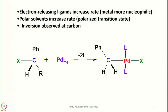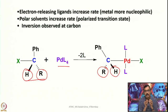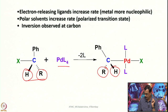Taking a chiral compound as an example, since addition occurs in a trans fashion, the configuration is changed — that is, inversion happens. So if any chiral substrate molecule undergoes nucleophilic oxidative addition, inversion can be observed in the oxidatively added product.